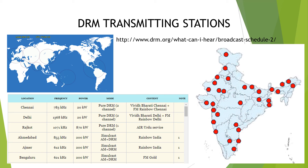Several Indian DRM stations are listed: Chennai, Delhi, Rajkot, Ahmedabad, Ajmer, and Bengaluru are DRM stations. There are both pure DRM stations and simulcast stations. For example, Vividh Bharati Chennai and FM Rainbow Chennai are pure DRM-based stations. Vividh Bharati Delhi and FM Rainbow Delhi are also pure DRM. However, Rainbow India from Ahmedabad and Ajmer operates simulcast AM plus DRM. FM Gold Bangalore is also on simulcast.